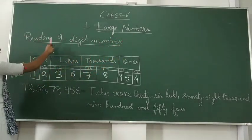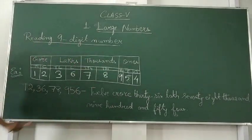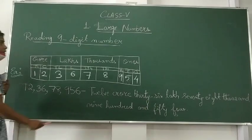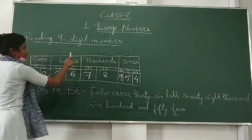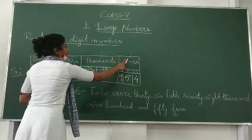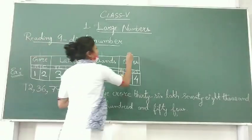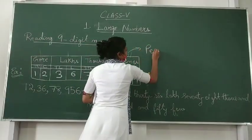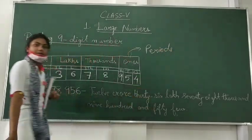How will you read a nine-digit number? Reading a nine-digit number — as I have previously shown you on the place value chart. Ones, thousands, lakhs, crore — these are called periods. There are four periods: crore, lakhs, thousands, and ones. We call them periods.